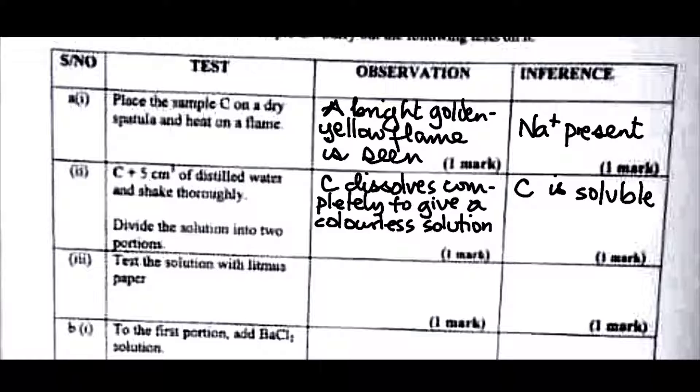Now test the solution with litmus paper. You are told to divide the solution into two portions. Test the solution with litmus paper. In our practice tutorial on this examination, we told you that C is a salt of a weak acid and a strong base which hydrolyzes in water to give an alkaline solution. So because it gives an alkaline solution, it will turn red litmus paper blue. Red litmus paper turns blue while blue litmus paper remains unchanged.